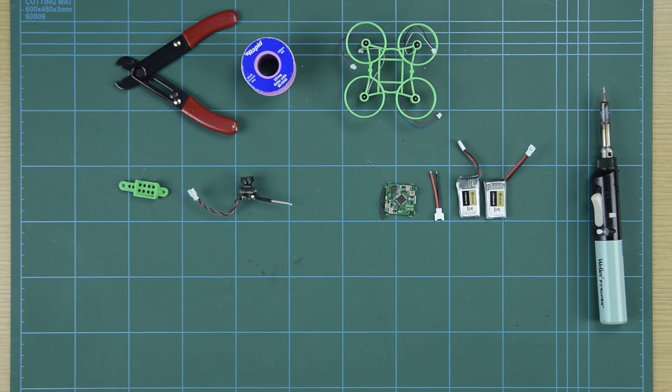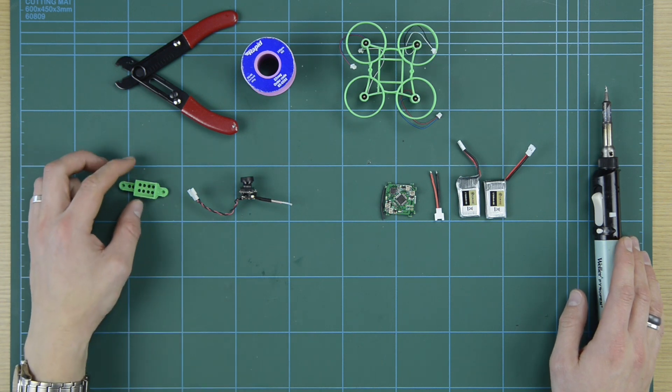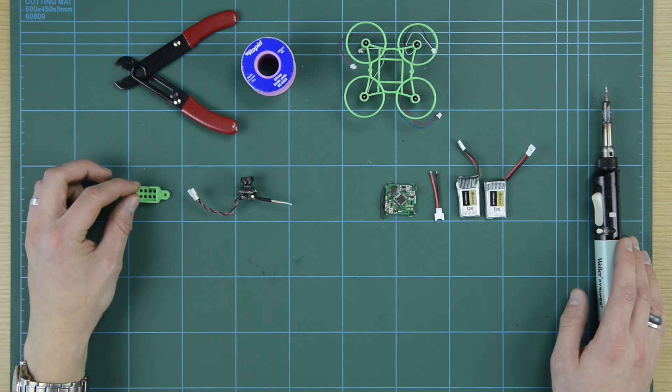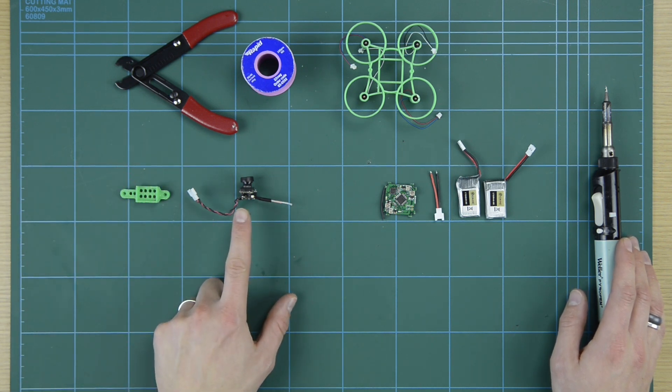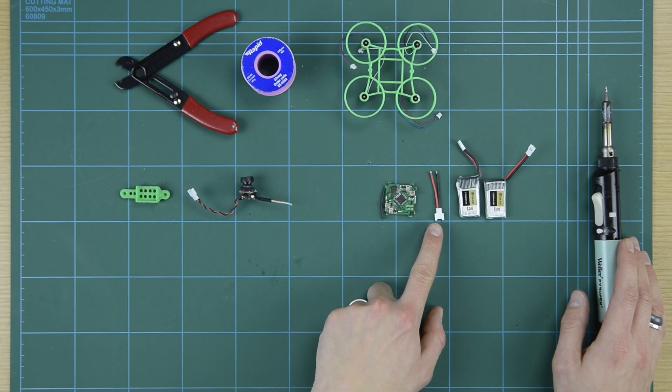So now we need to solder the battery connectors to the flight controller. For this step, you're going to need some wire cutters, solder and a soldering iron. You'll need a camera mount if you're mounting the FPV camera. So this is one that I designed on CAD and 3D printed. You'll need the FPV camera, the flight controller and the battery connector that comes in the flight controller package.